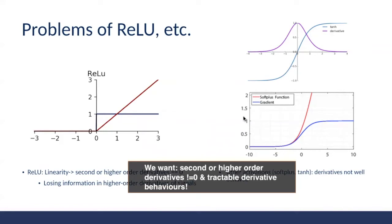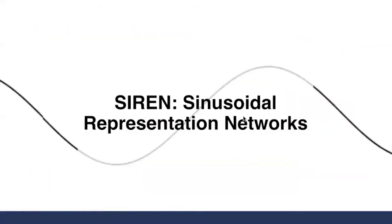What we want is an activation function with second or higher order derivatives not equal to zero, and we want them to have tractable derivative behaviors — so no disappearing or exploding derivatives. To tackle this problem, the authors propose Sinusoidal Representation Networks, or SIREN, which is a simple MLP network architecture that uses periodic sine as its non-linearity.